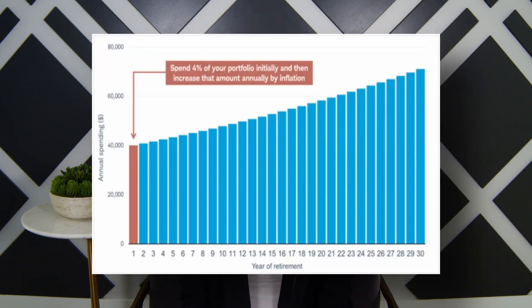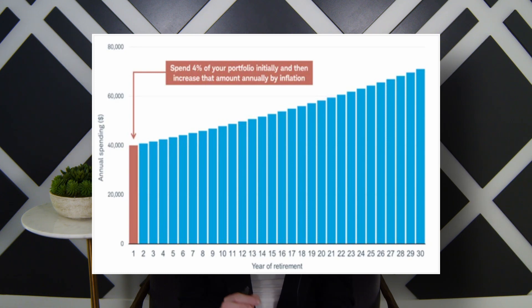It states you can withdraw 4% from your portfolio in your first year of retirement. Then, in subsequent years, you can adjust that amount for inflation. If you stick to that 4%, there's a very high probability of not outliving your money during a 30-year retirement. When combined with a prudent spending rule, a total return investing strategy has several advantages compared to an income approach.